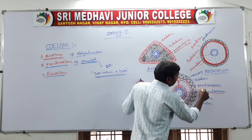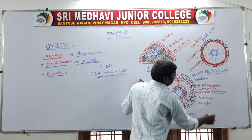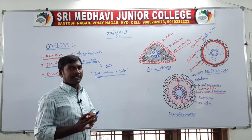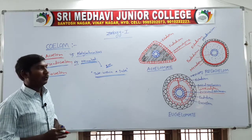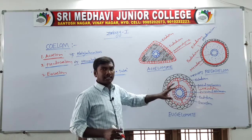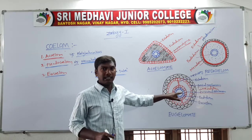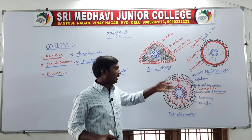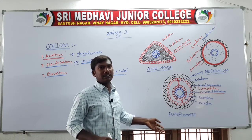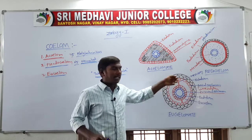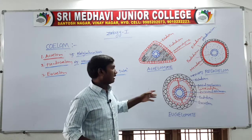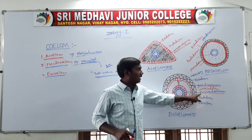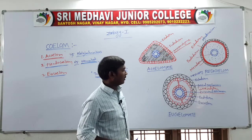In eucoelomates, both the parietal peritoneum (outer) and visceral peritoneum (inner) together constitute the mesoderm covering the body cavity. The animals that have a body cavity covered by the mesodermal epithelium are called eucoelomates or true coelomates. There is outer ectoderm, middle mesoderm, and inner endoderm, with the mesoderm forming two layers.